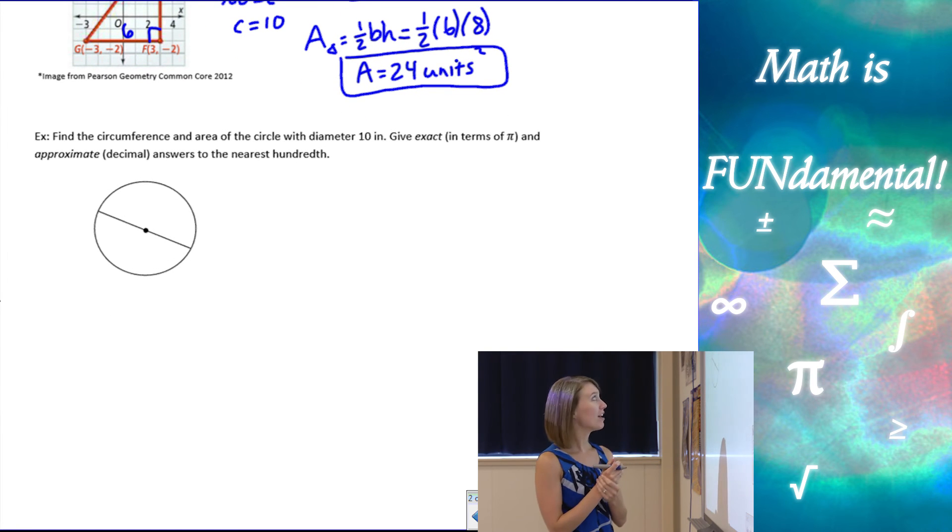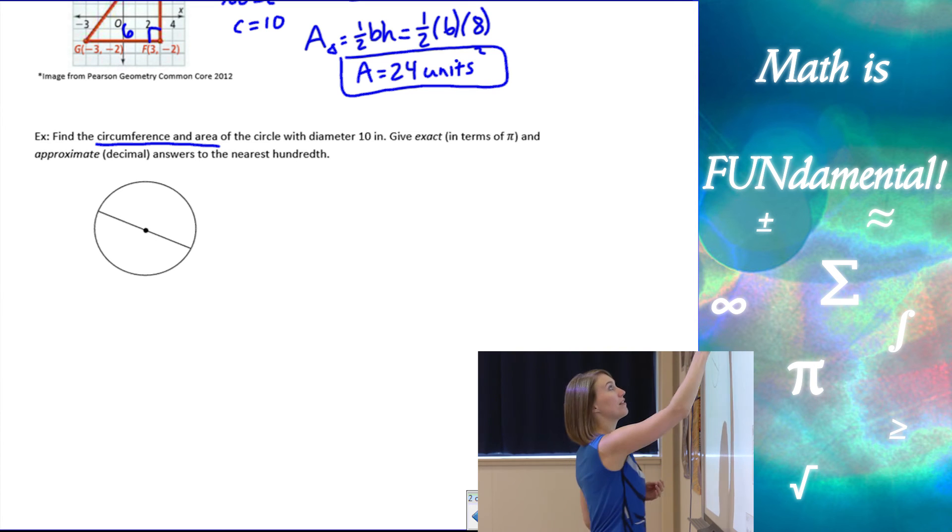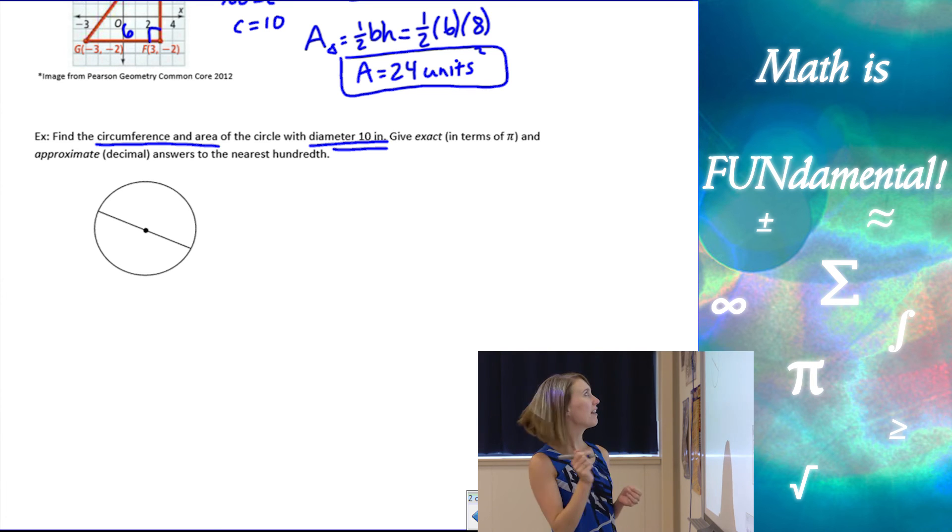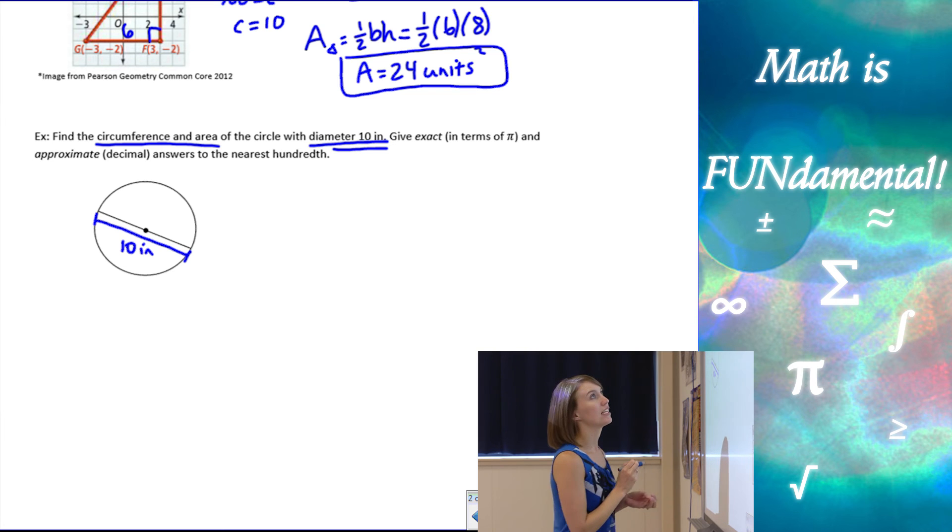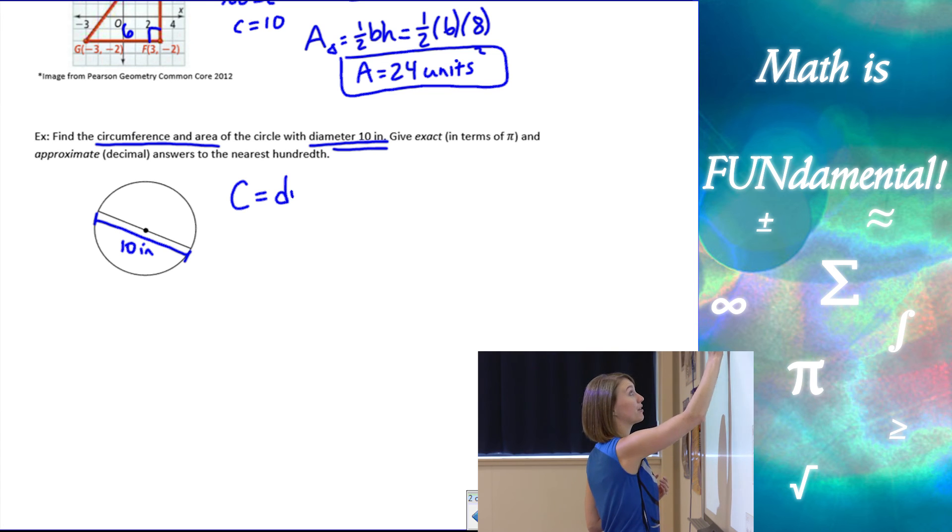Last example, we want to look at circles. So find the circumference and area of the circle with diameter 10 inches. Now notice, I like to underline some things in the problems when I do examples, because then I make sure I don't miss anything. It's easier for me to see the information. So I have 10 inch diameter. Give exact in terms of pi and approximate, which is decimal answers to the nearest hundredth. If my diameter is 10, circumference is diameter times pi. So that's just going to be 10 pi inches.